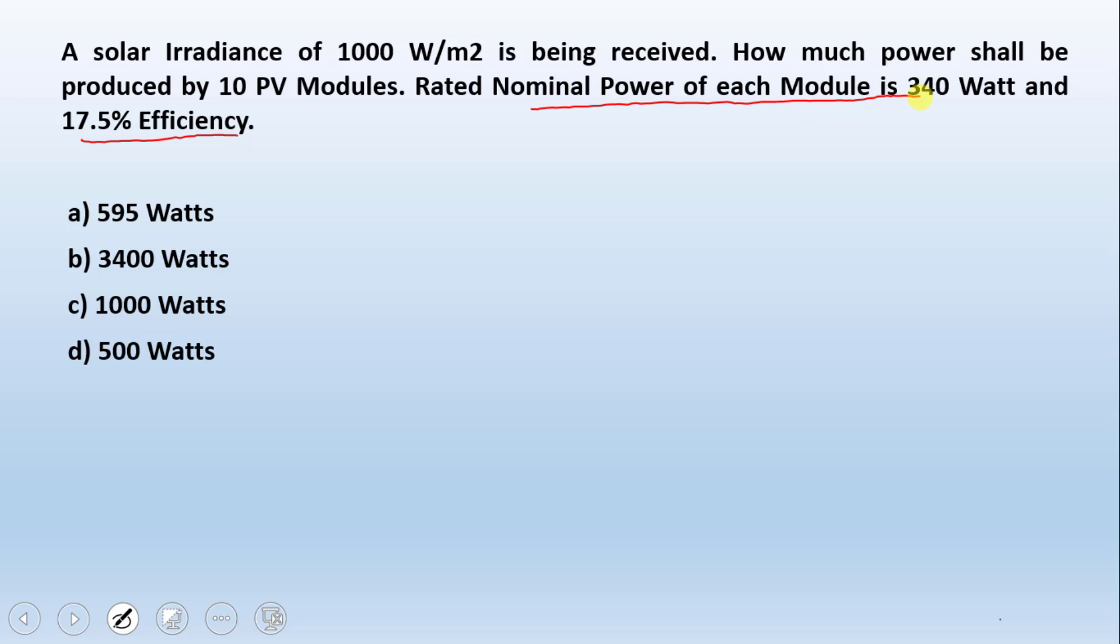The nominal rated power of the module is 340 watts. If the rated nominal power is 340 and there are 10 modules, then this will produce 3400 watts when there is 1000 watts per meter square being received.